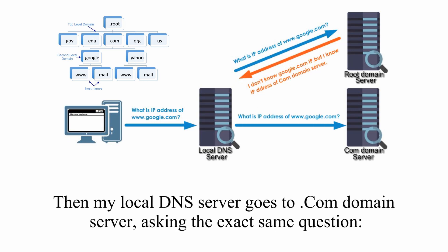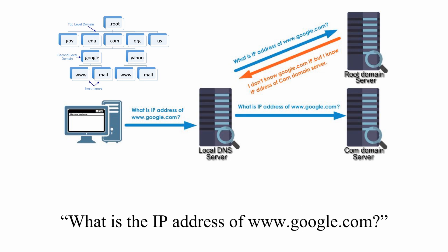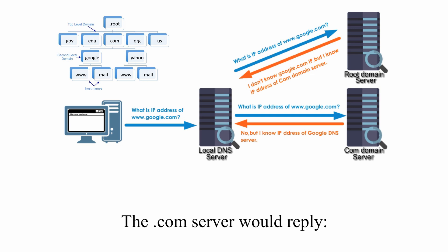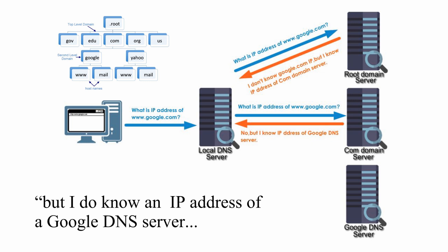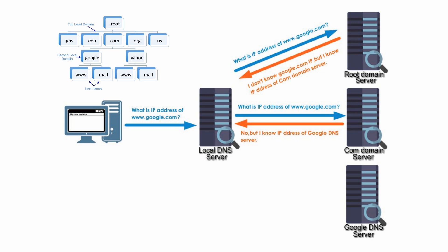Then my local DNS server goes to the .com server and asks: Do you know the IP address of www.google.com? The .com server would reply: I don't know the IP address of this Google web server, but I do know the IP address of the DNS server under me, and you can ask it. Here, the .com server also gave a referral.